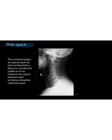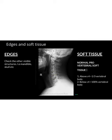D is our disc space. Intervertebral discs are typically difficult to see on x-ray, but we look between each vertebra to see if the spacing is relatively even. E is our edges and soft tissues. For edges, we look for fractures of surrounding bone like the cranium and mandible. For soft tissues, we look at normal prevertebral soft tissue: above C4 it should be less than one-third the width of the vertebral body; below C4, less than 100% of the vertebral body width. Any enlargement may indicate a prevertebral hematoma.